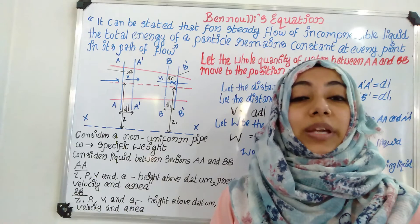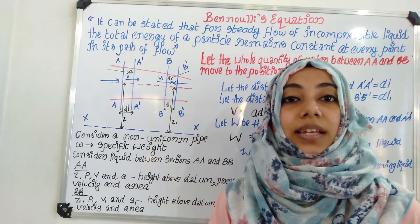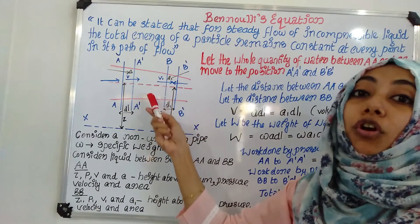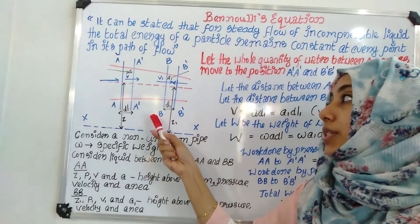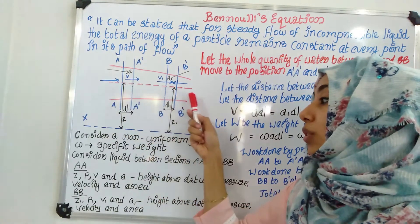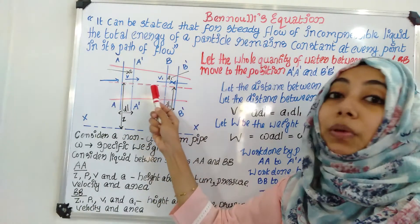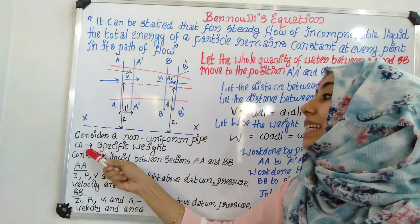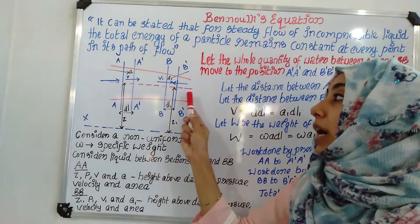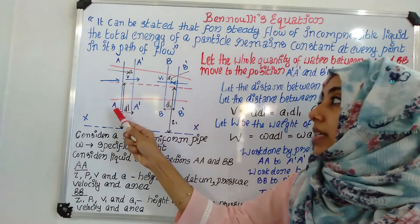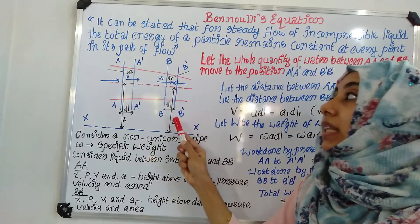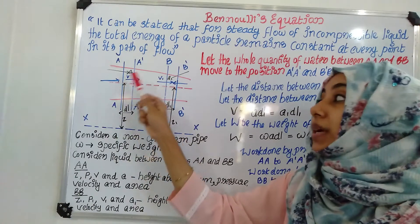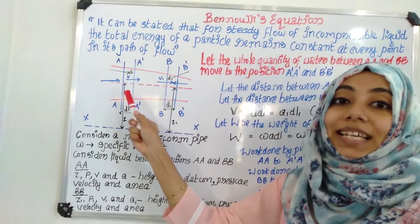To derive Bernoulli's equation in numerical expression form, consider a non-uniform pipe. We consider a non-uniform pipe whose diameter varies along its length. For the liquid flowing through this non-uniform pipe, the specific weight is denoted by small letter w. We mark two sections in this non-uniform pipe: section AA and section BB. We consider the liquid between section AA and section BB.